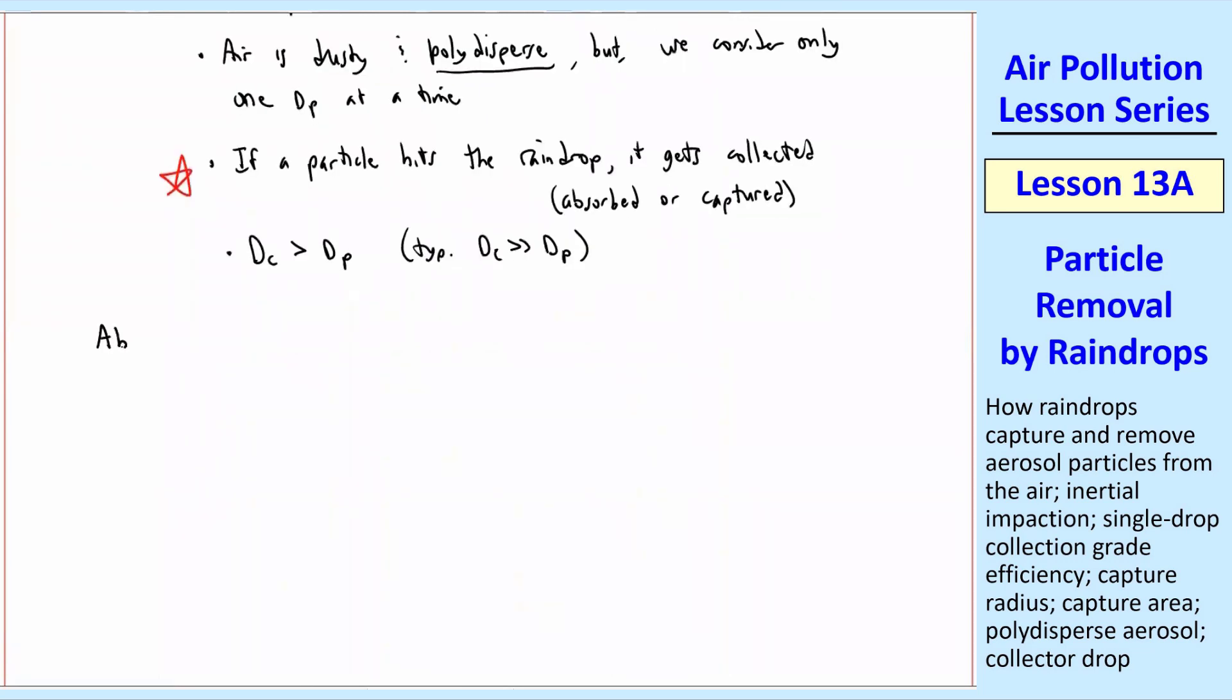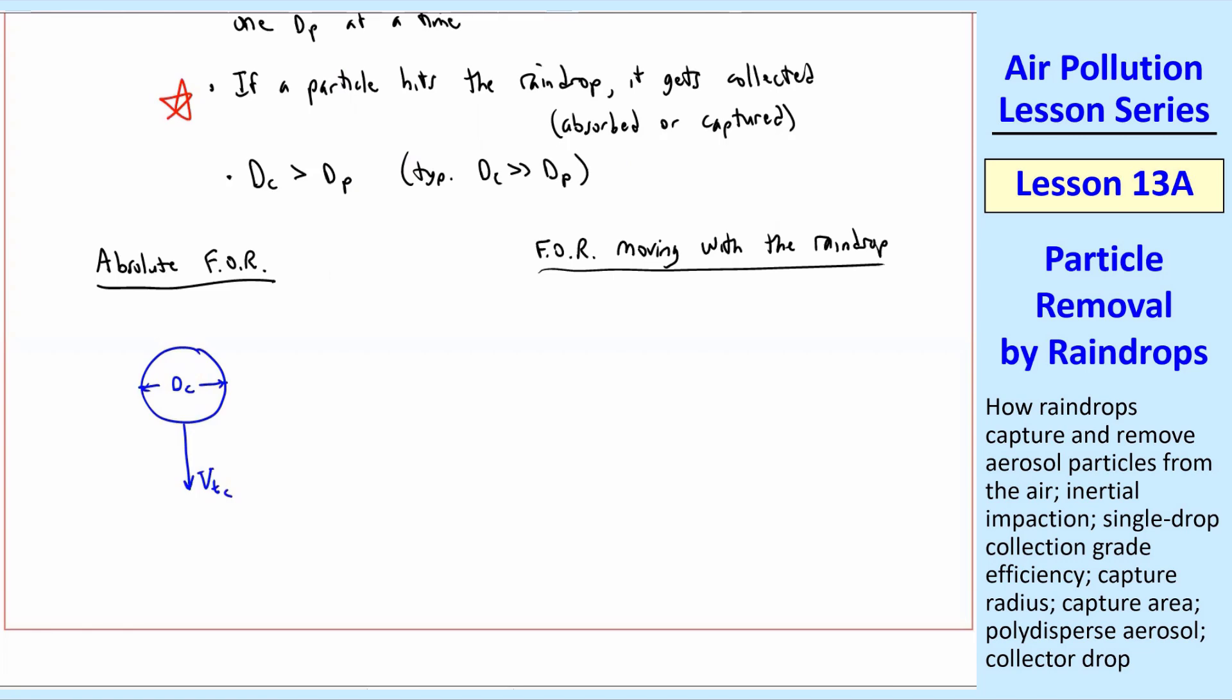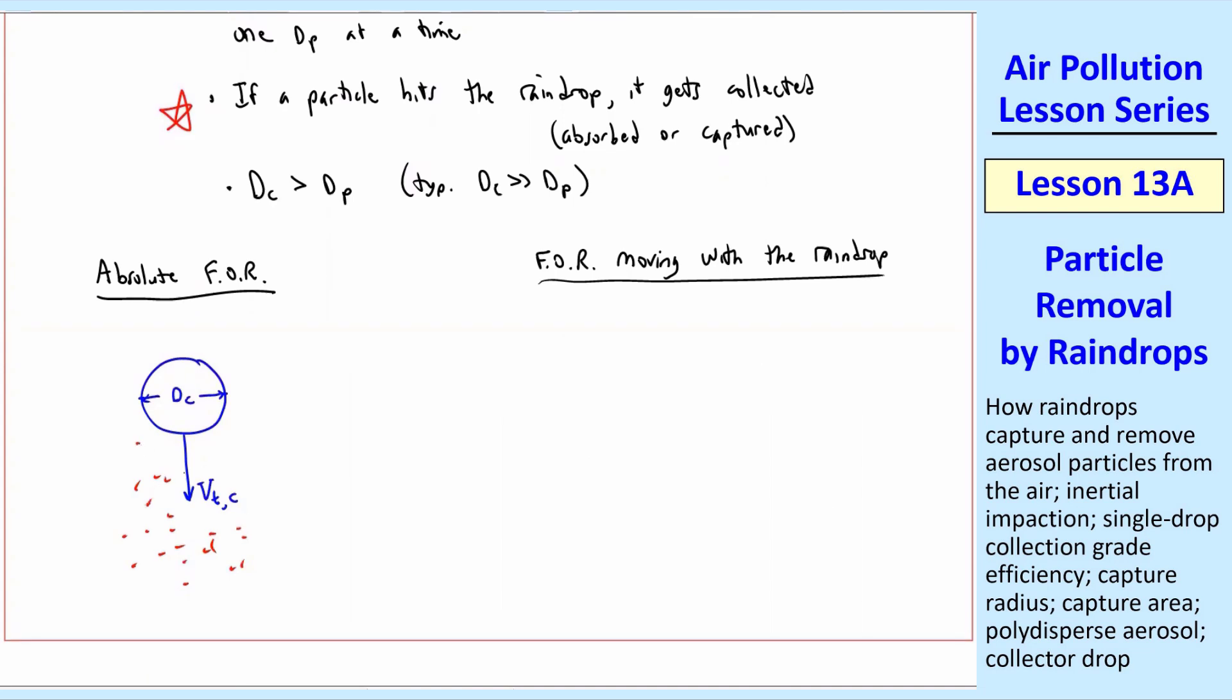Now we can think about this in two reference frames. The absolute frame of reference, or a frame of reference moving with the raindrop. In other words, falling with the raindrop. Pretend you're a camera, and as this raindrop falls, you're just falling right along with it. So in the absolute frame of reference, our raindrop is falling at terminal settling speed VTC. There's dusty air. These particles are falling at some VTP. If we transform into the frame of reference moving with the raindrop, now the raindrop seems to be standing still because we're moving with it, and the air is moving up at speed VTC.